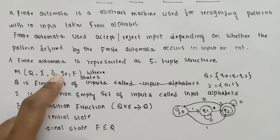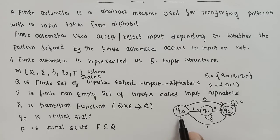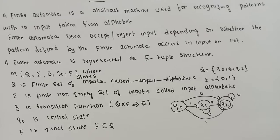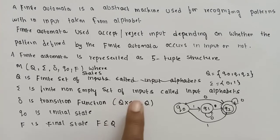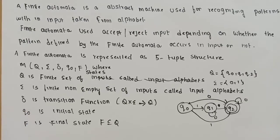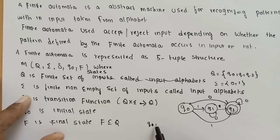Delta is the transition function. What is delta? In a particular state, when an input symbol is applied, delta maps to the next state. For example, suppose Q0 is the current state and the input symbol is 0; delta transitions to the next state.